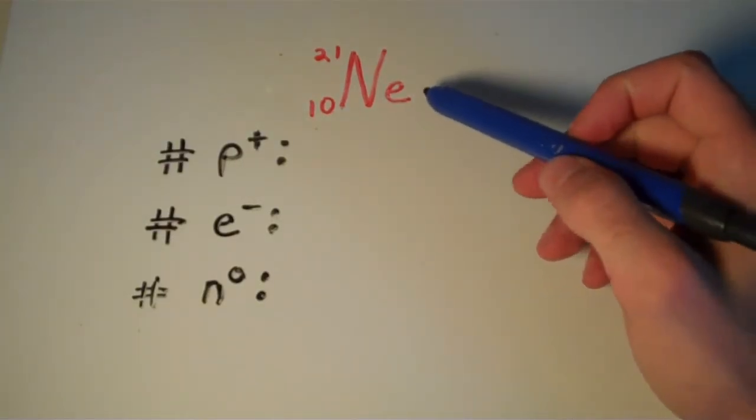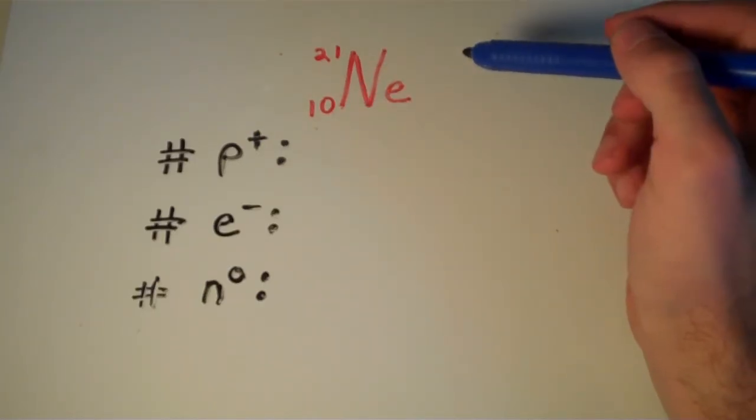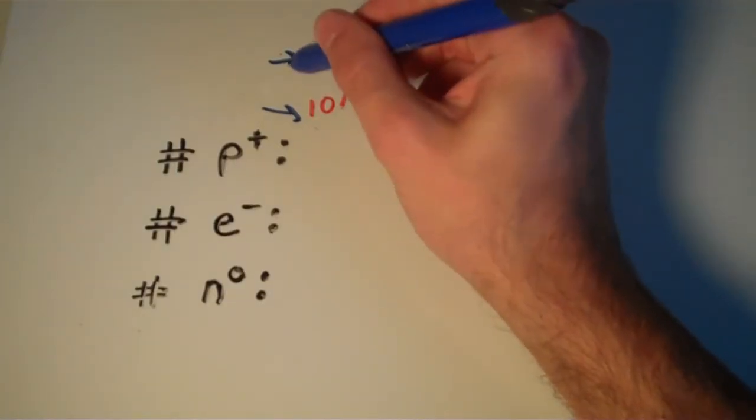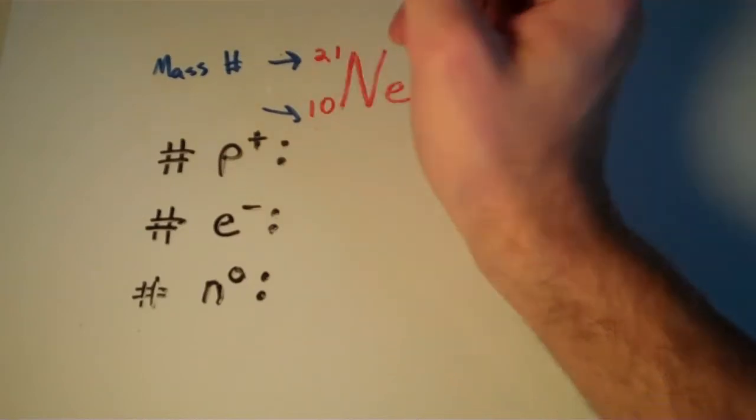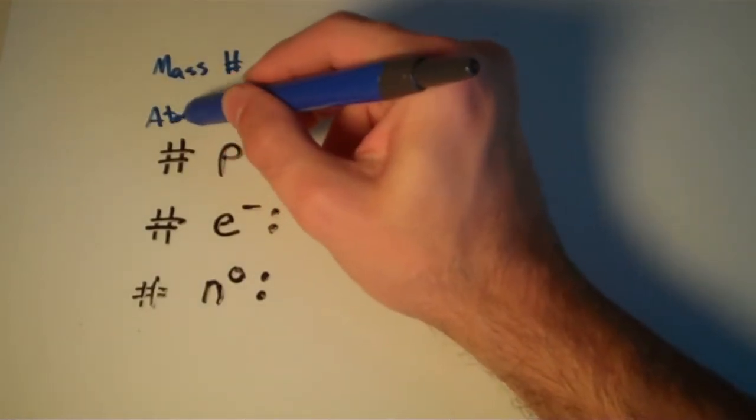Here we have a neon atom that has a mass number of 21 and an atomic number of 10. So, remember that this is our mass number. And remember that this number on the bottom here, this is our atomic number.